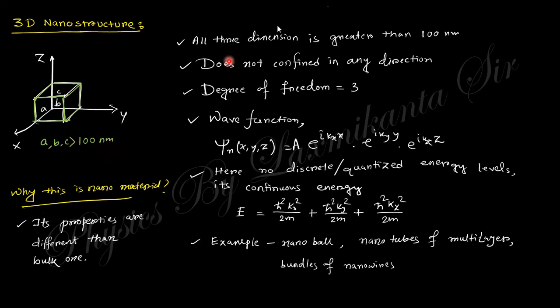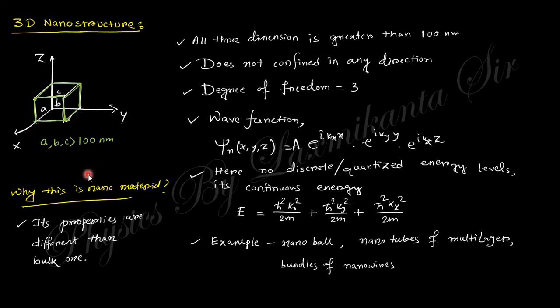For 3D nanomaterial, all dimensions are above the nanometer order — above 100 nm — so degree of freedom is three. Examples include nano bundles or multi-layer assemblies of nanotubes. You might ask: why call this a nanomaterial if it is all above the nanometer order? Because its property is different from the bulk material. So you can conclude: size is not what is most important — what is important is that the properties differ from the bulk.